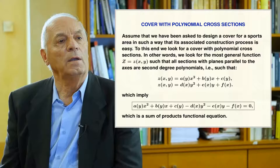This is a functional equation where the unknowns are the functions a, b, c, d, e, and f. Note that each term is the product of a function of x and a function of y, where a constant function 1 is considered in the third term as a degenerate case of a function of x, and in the sixth term a degenerate function of y. Thus, we have our sum of products functional equation.